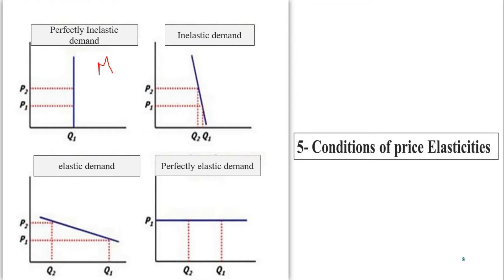An example of perfectly inelastic demand is medicine. If a doctor has advised you to take a certain medicine and the price is increasing, you still have to buy that same amount — you can't stop buying medicine. Another example of inelastic demand is petrol. Though the price of petrol keeps increasing, you have to buy it because you've already bought a car or bike. In the long run you can decrease the quantity used, but not proportionally to the price increase.